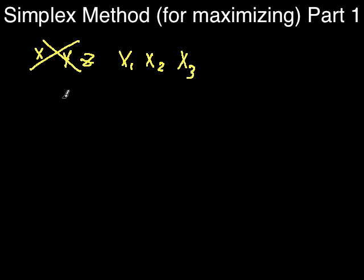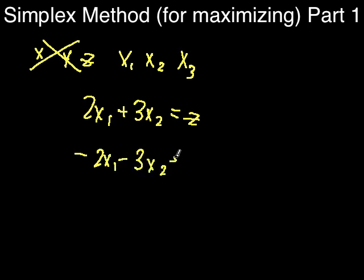So let's say you have the objective function 2x sub 1 plus 3x sub 2 equals z. To convert this, move all the variables to the side that z is on, making sure that z stays positive. So the result should equal 0. So this changes to negative 2x sub 1 minus 3x sub 2 plus z equals 0.